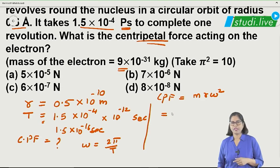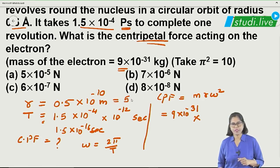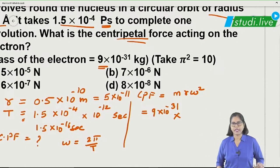Please do calculate in your notebook. Substituting all values: CPF equals 9 into 5 into 10 raised to minus 42, into 4π squared upon T squared. Since pi squared is approximately 10, we write 4π squared as 40. T value is 1.5 into 10 raised to minus 16 seconds.